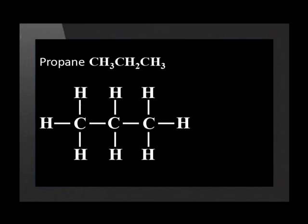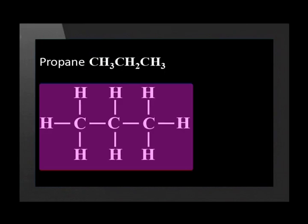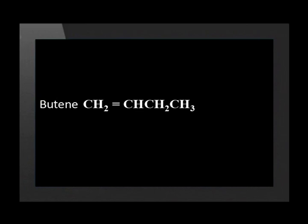Up to now we have represented molecules with models and using the structural formula. It is also possible to show the molecule using a condensed structural formula. For example, propane can be written as CH3CH2CH3. This condensed structural formula does not show the bonds, whereas the structural formula shows all the bonds. The condensed structural formula can show some bonds, such as this example of butene. But remember, if you are asked for the structural formula you must show all the bonds — it's tedious but it will pay off in good marks.